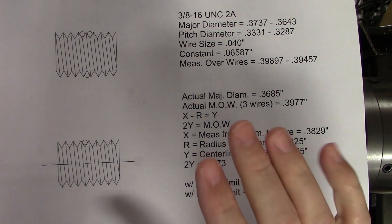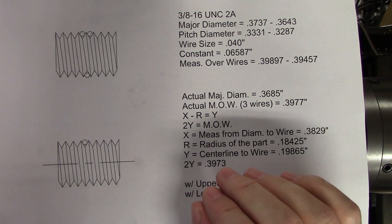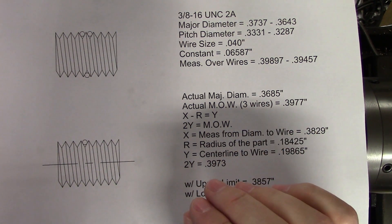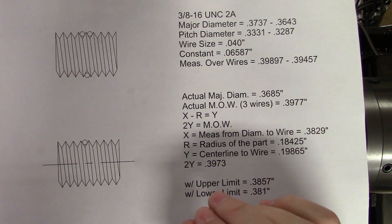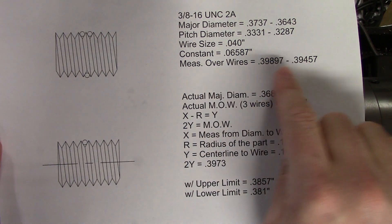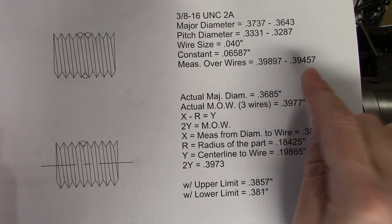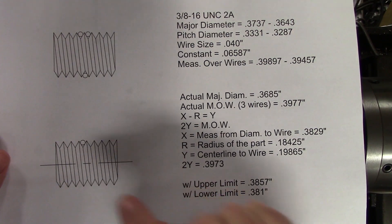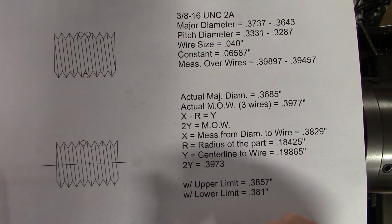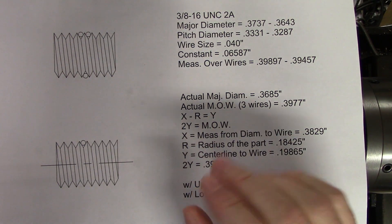This works reasonably well, and it's very easy to handle a single wire. You can also get an acceptable range by reconfiguring the math. Take your acceptable measurement over wires range, divide by two, and then add the radius of the part to those measurements. Now you have an acceptable range for the single wire.